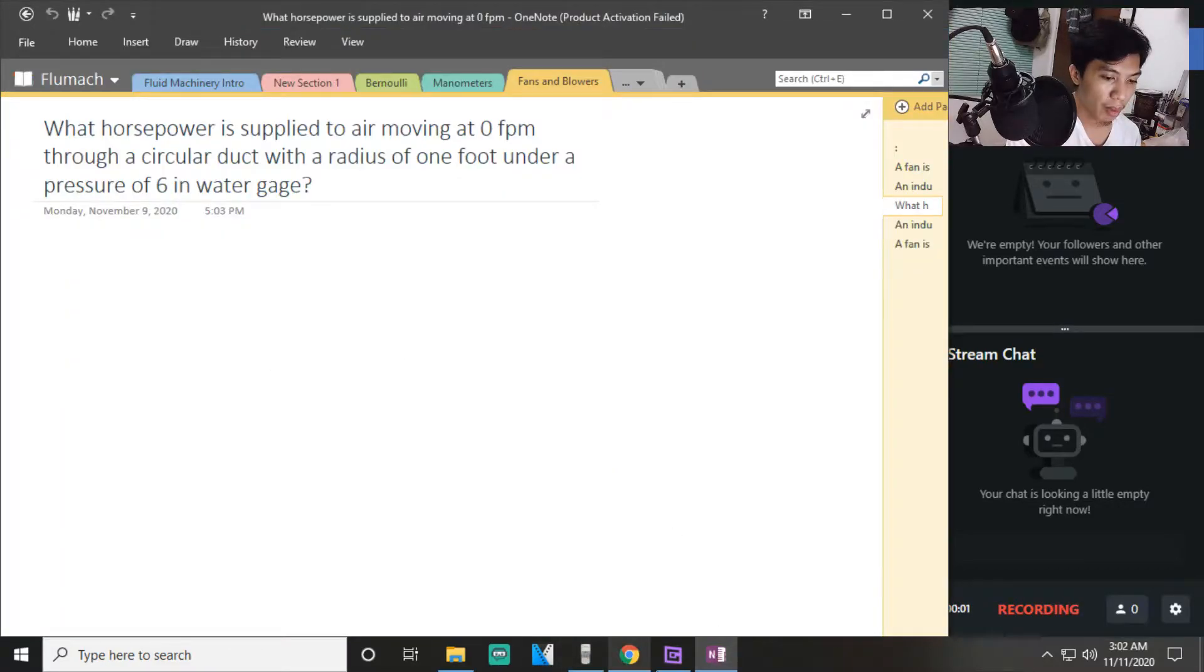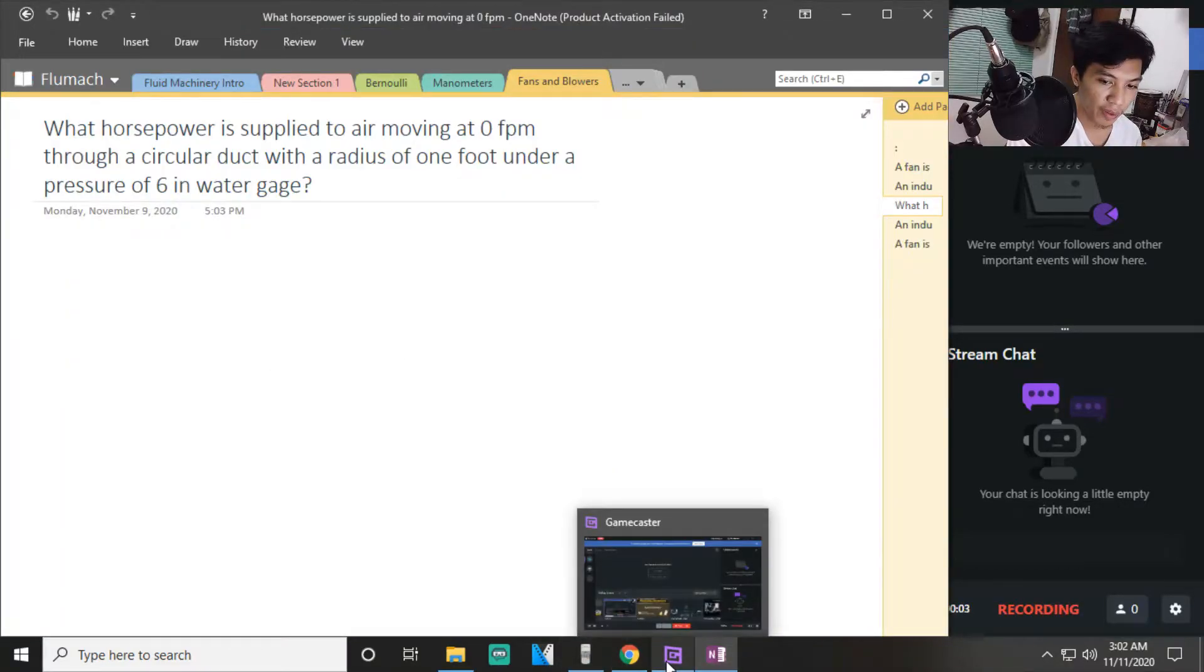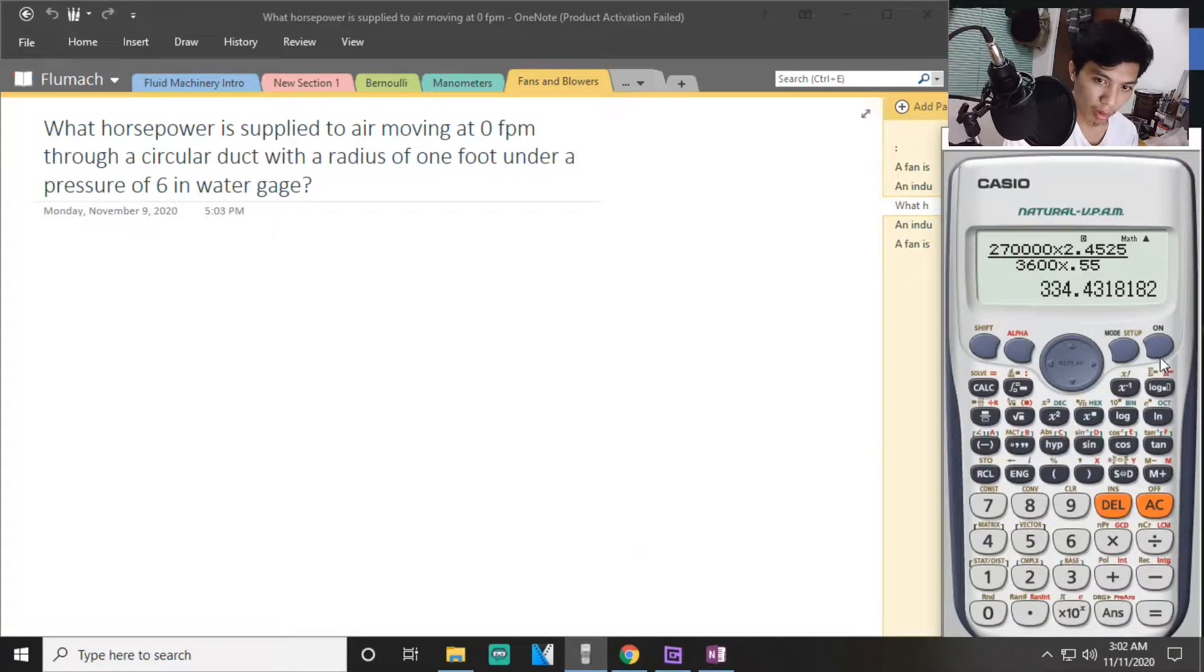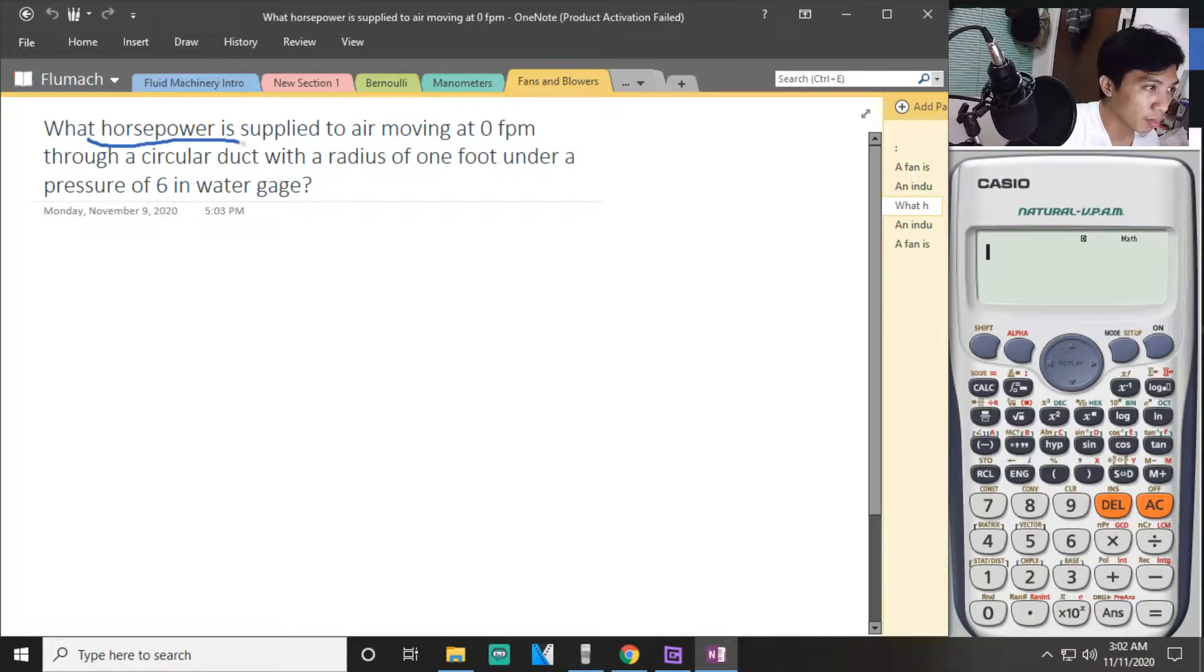So for problem number 3, what horsepower is supplied to air? What horsepower is supplied to air moving at 30 FPS through a circular duct with a radius of 1 foot under a pressure of 6 inch water gauge?